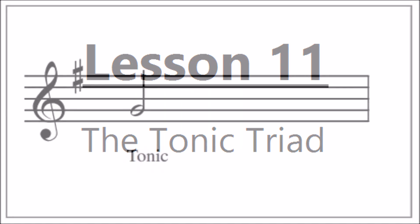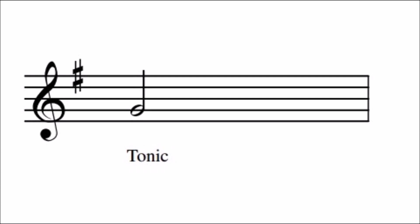Another name for the first degree of the scale is called the tonic, and a triad is a group of three notes played at the same time, that is a chord. The tonic triad uses the first, third, and fifth notes of the scale.